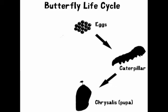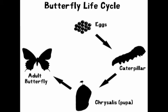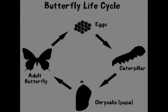After several weeks, the chrysalis cracks open and out comes the adult butterfly. The adult then mates and the process starts over when she lays eggs.